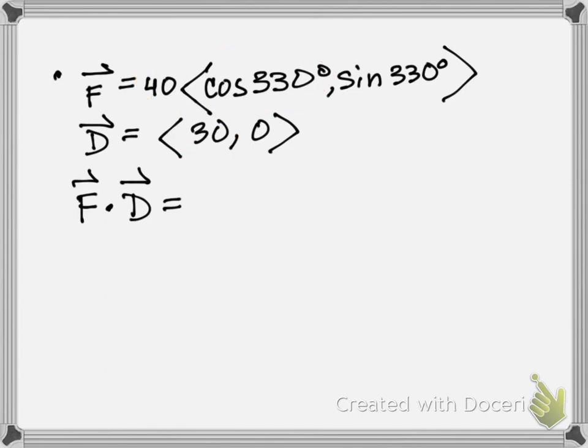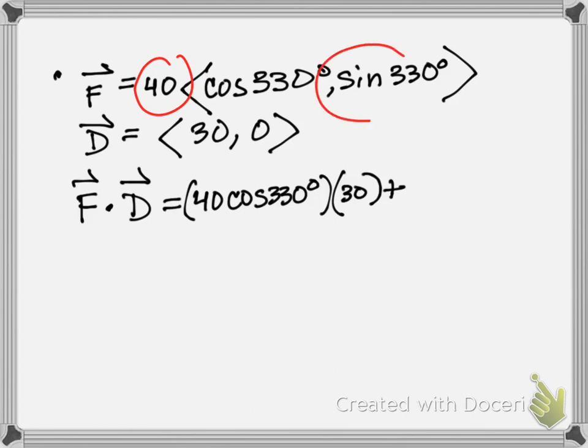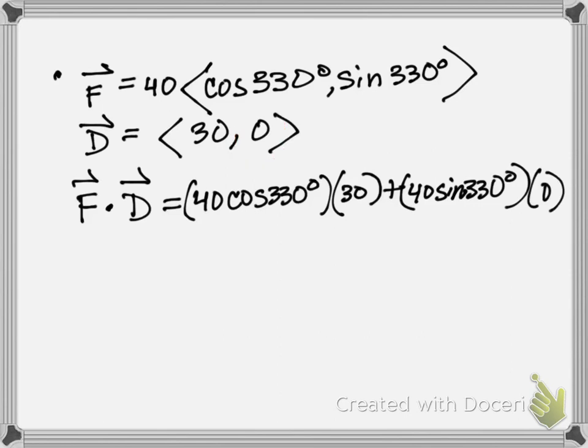40 sine 330 times zero, which of course I didn't need to do, right? Because that's just going to come out to zero.